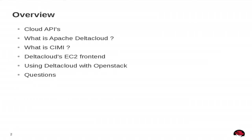I'll talk about cloud APIs in general — what the general landscape is. Then I'll talk about what Apache Delta Cloud does, what it's for, and what it's solving. I'll explain what CIMI is. I'll say a few words about the EC2 frontend we have. And then I'll talk about how to use Delta Cloud with OpenStack.